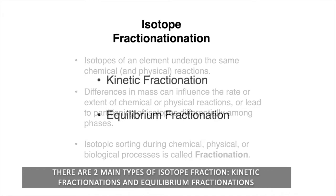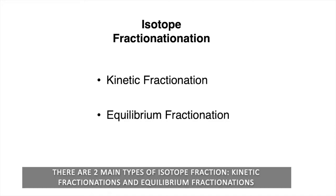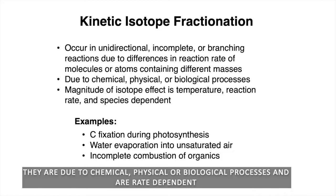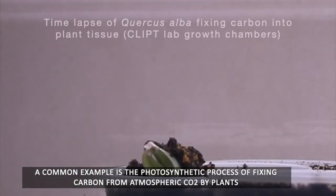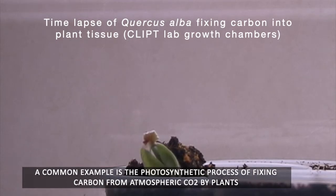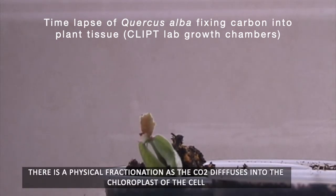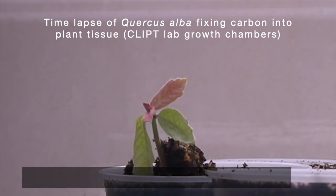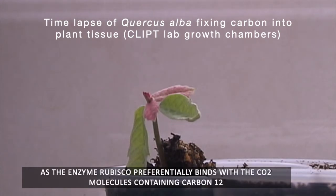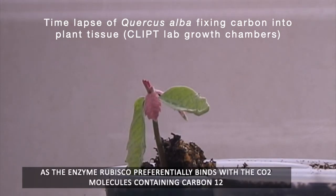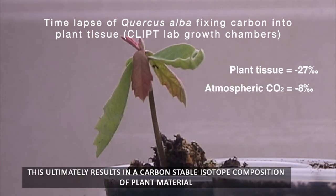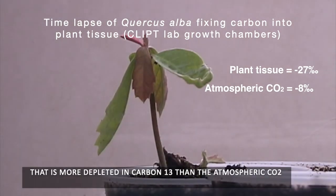There are two main types of isotope fractionation: kinetic fractionations and equilibrium fractionations. Kinetic fractionations occur in unidirectional, incomplete, or branching reactions. They are due to chemical, physical, or biological processes, and are rate dependent. A common example is the photosynthetic process of fixing carbon from atmospheric CO2 by plants. There is a physical fractionation as the CO2 diffuses into the chloroplast of the cell, with the lighter isotope diffusing more readily. There is also an enzymatic fractionation as the enzyme rubisco preferentially binds with the CO2 molecules containing carbon-12. This ultimately results in a carbon stable isotope composition of plant material that is more depleted in carbon-13 than the atmospheric CO2.